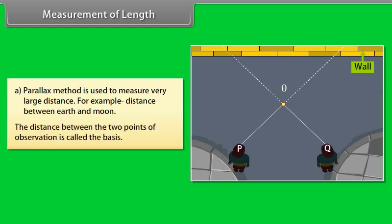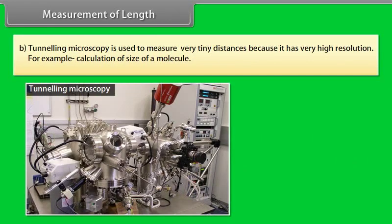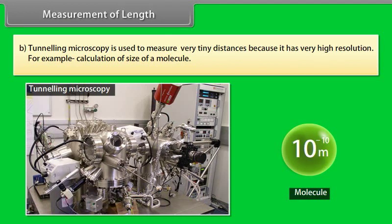She notices that the position of the rod seems to change with respect to the wall. This is known as parallax. The distance between P and Q is called basis. Tunneling microscopy is used to measure very tiny distances because it has very high resolution, for example calculation of size of a molecule.